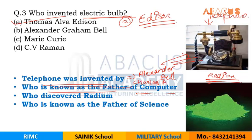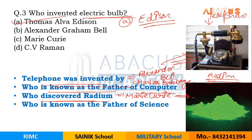Charles Babbage is known as the father of the computer. Who discovered Radium? Radium was discovered by Marie Curie. Radium is a substance that emits and reflects light.